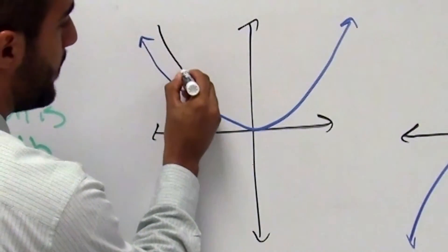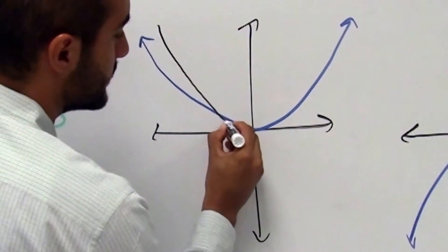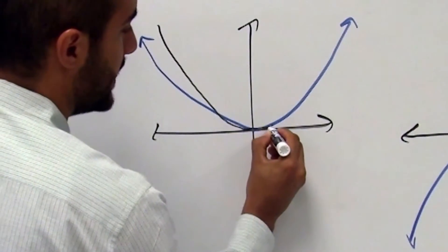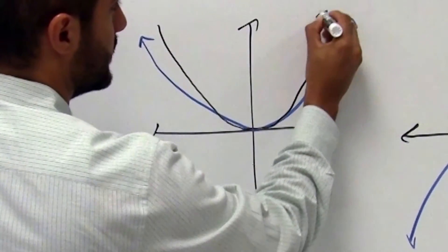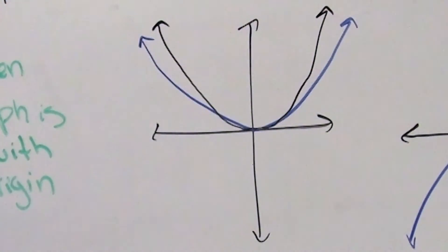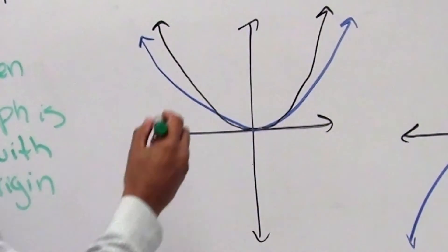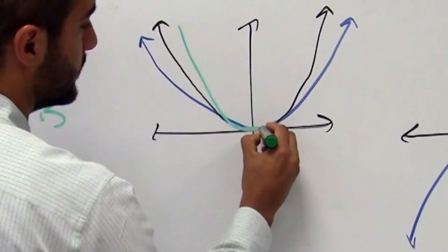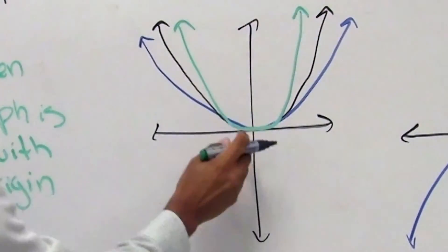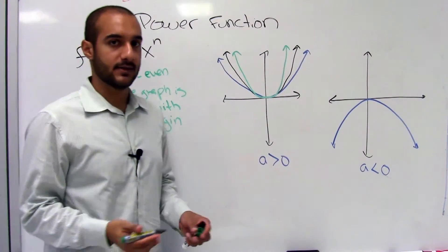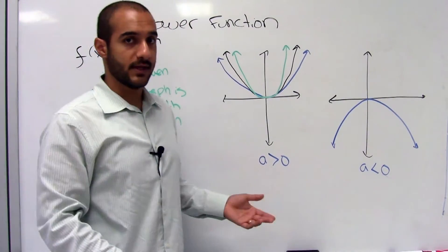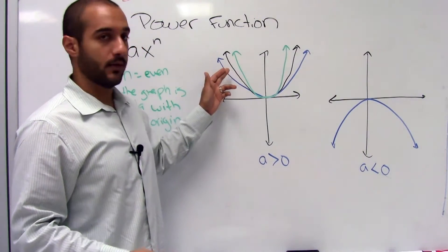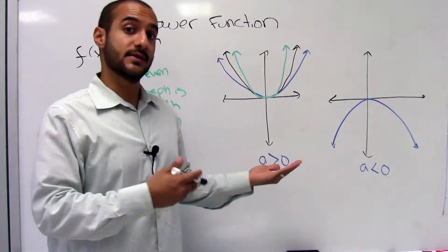But here it'll flatten out as it gets closer to the x-axis. And the more you increase it, the steeper it'll become, but it'll flatten out as you get closer and closer to the x-axis. So you can say that the blue one would be, let's say, x to the second power. The black one could be x to the fourth, and the green one could be x to the sixth.